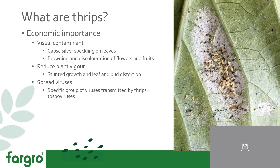So why are they important to growers? They are one of the primary pests of almost all different crops within horticulture. The major issue for ornamentals is they're a visual contaminant — they cause silver speckling on leaves, where they've sucked all of the contents out of the cells, leaving them a pale whitish colour. At more intense levels of infection, they can cause browning and discoloration of flowers and fruits.